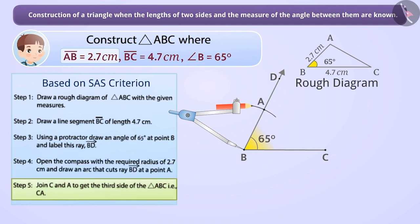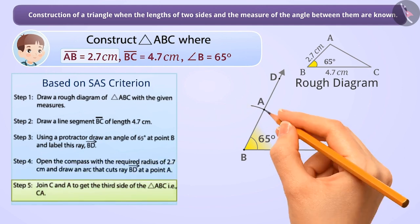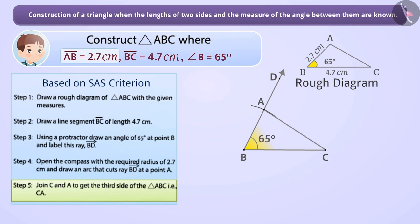Step 5. Join points C and A to get the third side of the triangle ABC, i.e. CA. Thus, we obtained triangle ABC using the SAS congruence criterion.